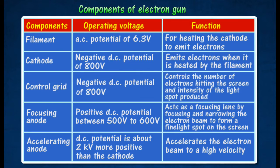The control grid is placed between cathode and anodes. It is used to control the number of electrons hitting the screen and intensity of the light spot produced. The focusing anode serves as a focusing lens by focusing and narrowing the electron beam to form a fine light spot on the screen.